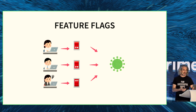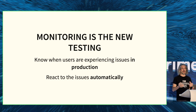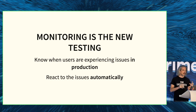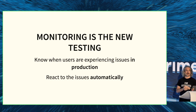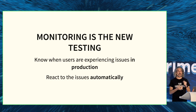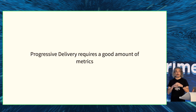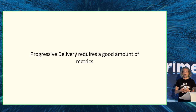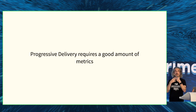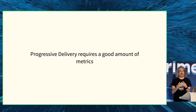One common thing all these techniques share is that you are basically testing in production. We were always told don't test in production, but I think monitoring is the new testing. It's very hard to reproduce a lot of issues outside of production, and even if you do a lot of tests, you still need monitoring. The better your monitoring is, the safer your deployments to production will be. When you have good monitoring, you can react to issues automatically. Progressive delivery requires a good amount of metrics — you need to know what your experiments are and what 'successful' means.